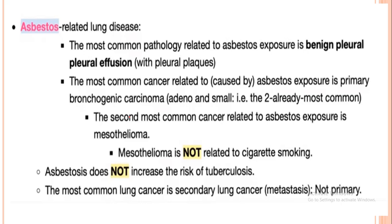For asbestos exposure: the most common pathology related to asbestos is benign pleural effusion. The most common cancer related to asbestos exposure is primary bronchogenic carcinoma — either adenocarcinoma or small cell. The second most common is mesothelioma, which is not related to smoking but is related to asbestos. Remember that asbestos does not increase the risk of tuberculosis — this is a common misconception. The most common cancer found is metastatic, not primary.